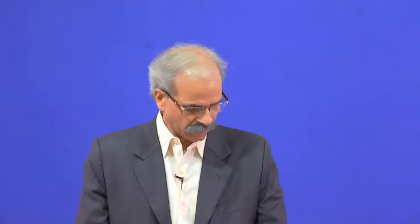In this lecture — lecture number 24 in the series — we take up a design example so you have some idea about how to design a particular type of seed drill. We want this tractor-drawn seed drill to be designed for a 40 horsepower tractor. Most tractors available in the country were about 35 HP a decade ago, and now we are talking of 50 HP tractors. Since the number of tines does not vary much between 35 and 50 HP, we have taken 40 HP as an average example.